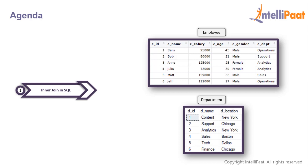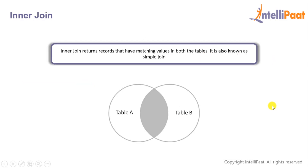We'll be implementing the inner join on two tables. First is the employee table, which comprises employee ID, employee name, employee salary, age, gender, and the department in which the employee works. Then we have the department table, which comprises department ID, department name, and the location where the department is present.